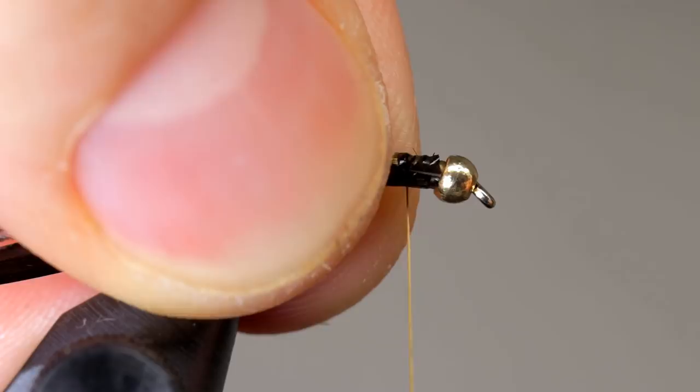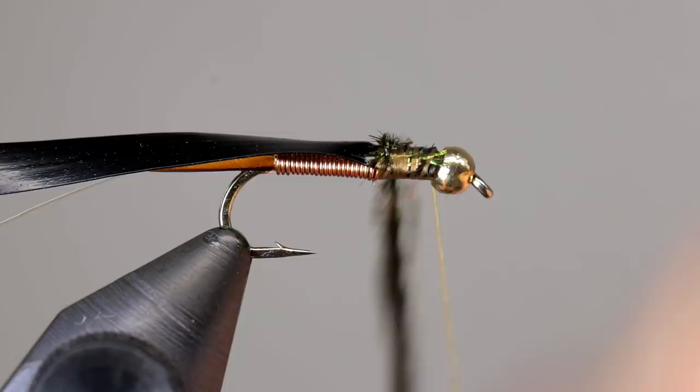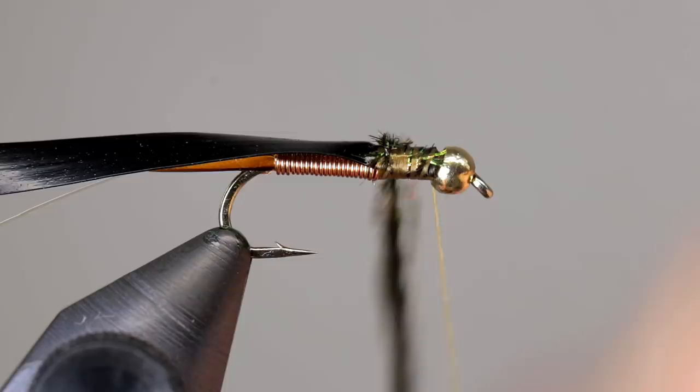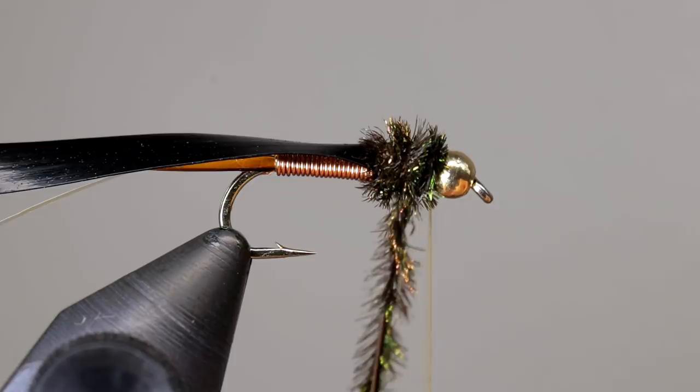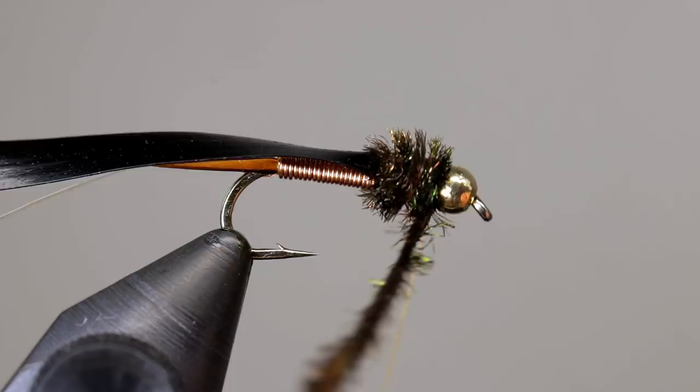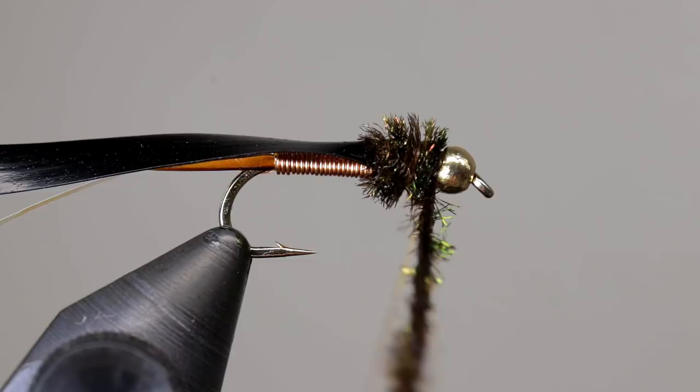Twist the peacock a couple of times so the two strands stay together, and begin building up a thorax. Once you are satisfied with the thorax, tie off the peacock immediately behind the bead, making sure to place wraps on either side to lock it in place. Once secure, cut the hurl off close to the bead.